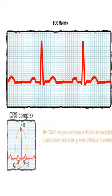The QRS complex represents ventricular depolarization. Depolarization occurs just prior to contraction, or systole.